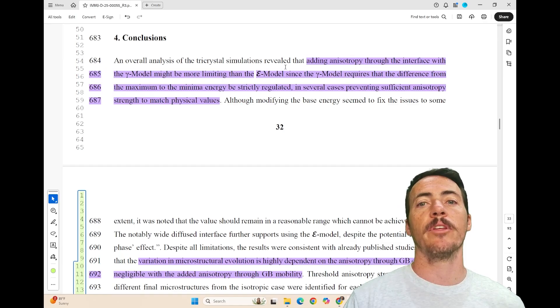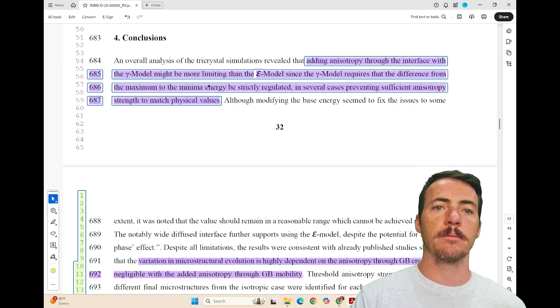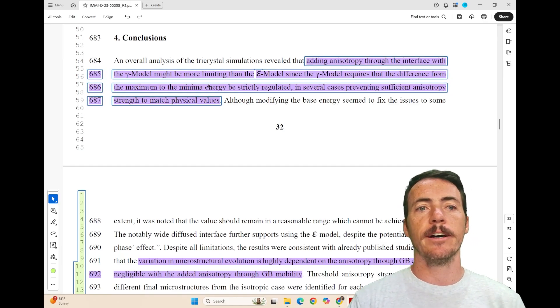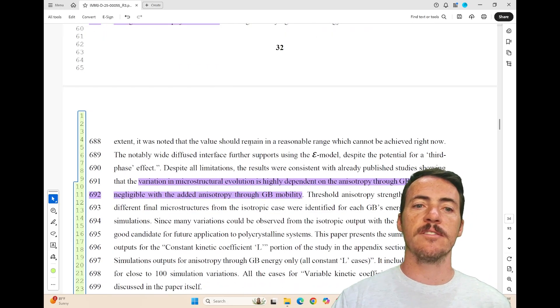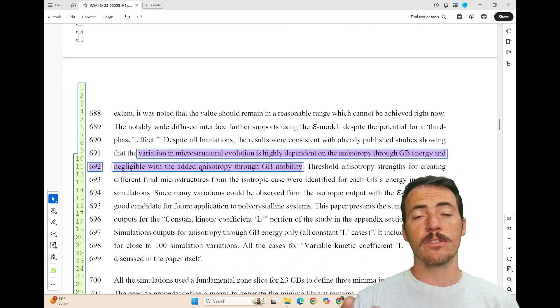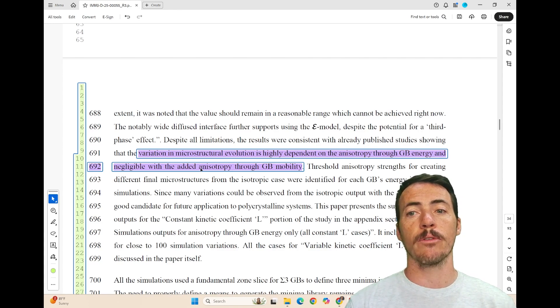The gamma model requires the difference of the maximum and the minimum to be regulated, which is going to be limiting. Another thing they noticed is that the variations in the microstructure evolution that they observed were highly dependent on the anisotropy through the grain boundary energy, but the grain boundary mobility was negligible.